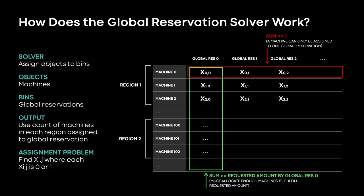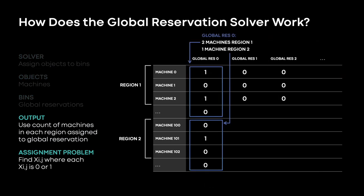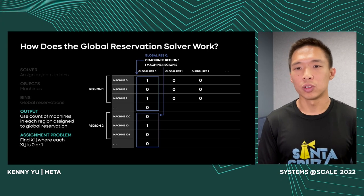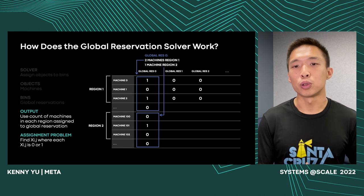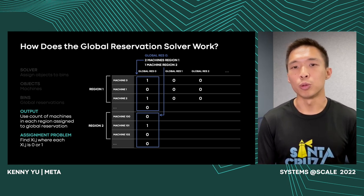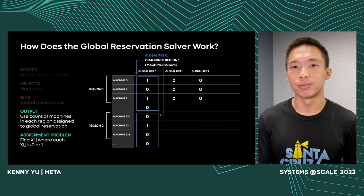In a particular example of solver output, the global reservation has two machines assigned in region 1 and one machine assigned in region 2. This is how we generate the regional reservations for RAS to then materialize in each region. We run the solver continuously to improve the placement. This approach works well for latency tolerant services that can be easily shifted in isolation, but not so well for latency sensitive services where we must consider the placement of upstream and downstream dependencies as well. I'll now hand it over to Ranjith to talk about global capacity management for latency sensitive services.